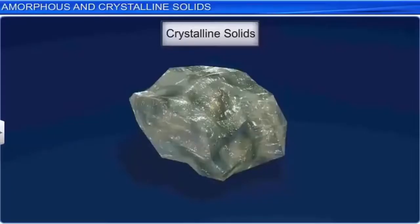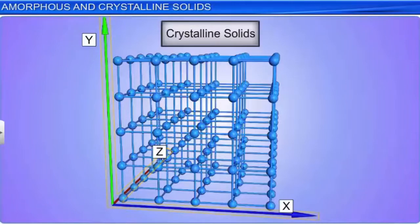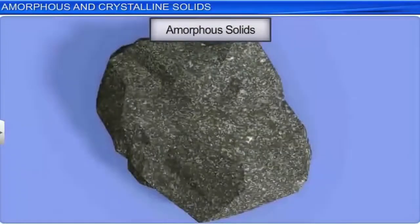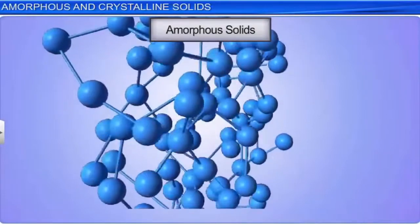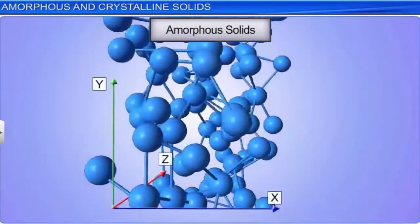Crystalline solids are anisotropic in nature. In other words, some physical properties like refractive index and electrical resistance change along with the change in the direction of the solid. This is due to the ordered molecular arrangement. Amorphous solids are isotropic in nature; they show the same physical properties in all directions, due to the random arrangement of the solid.